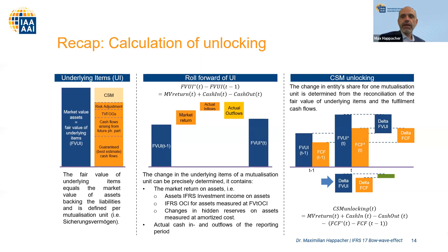When it comes to CSM unlocking, what has to be unlocked is the change in the fair value of the underlying item minus the change in the fulfillment cash flows during the period. That's how it is defined in the standard — the delta of the fair value of underlying items minus the delta of the fair value after fulfillment cash flows has to go to the CSM at the end of the period.